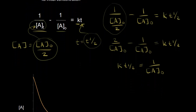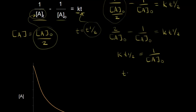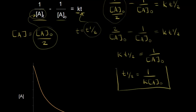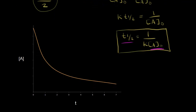Now we can solve for the half-life — just divide both sides by K. So we get the half-life is equal to one over K times the initial concentration of A. This is our equation for the half-life of a second order reaction. Notice this is very different from the half-life for a first order reaction. For a first order reaction, the half-life was constant, but here the half-life depends on the initial concentration of A.